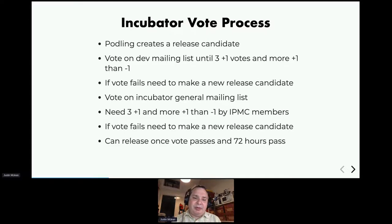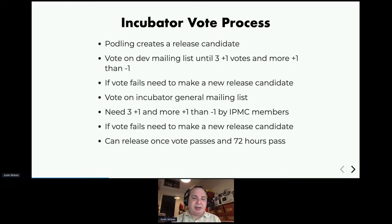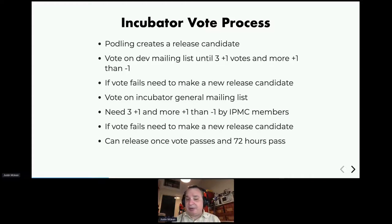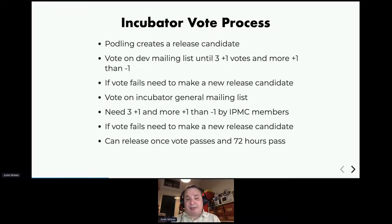Once you've voted on the dev list, the incubator votes on it. To become an official release, it needs three plus-one votes by incubator PMC members — again, a minus-one is not a veto. This process lasts 72 hours on both the dev list and the incubator list, though that's just a guideline; for urgent security issues it can happen faster. The concept behind 72 hours is to allow people who don't work full-time on the project, or who are in different time zones, to be involved in the release process.